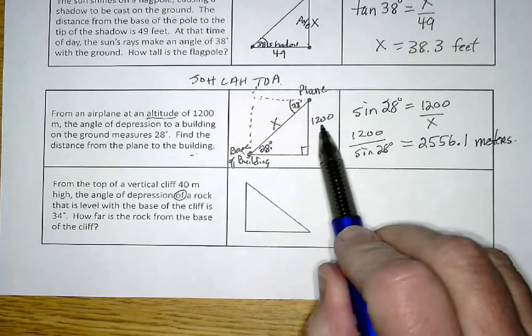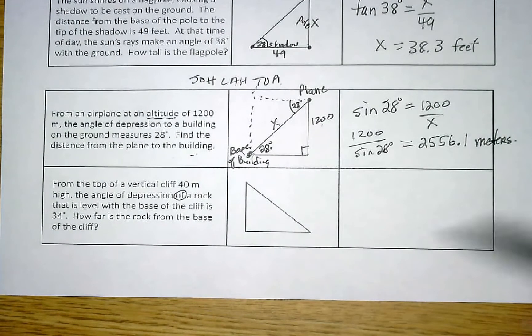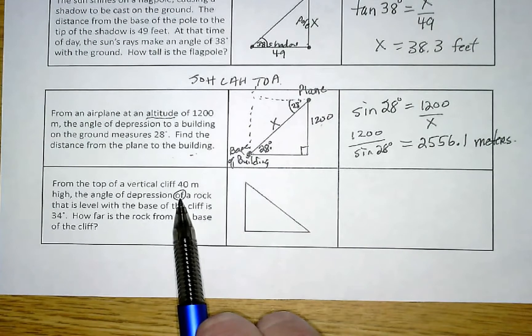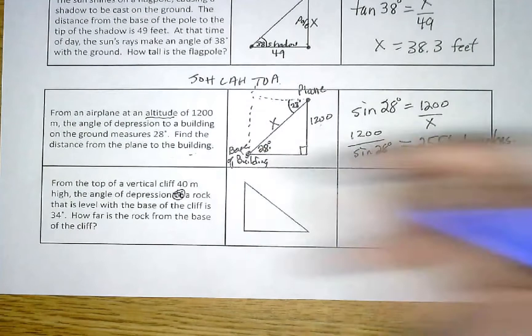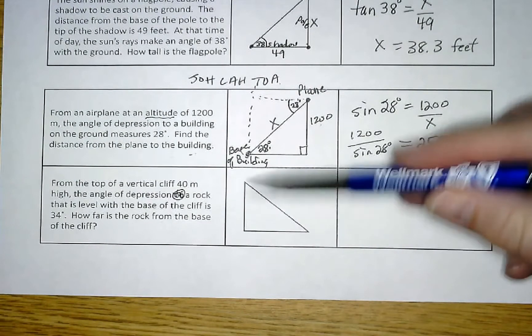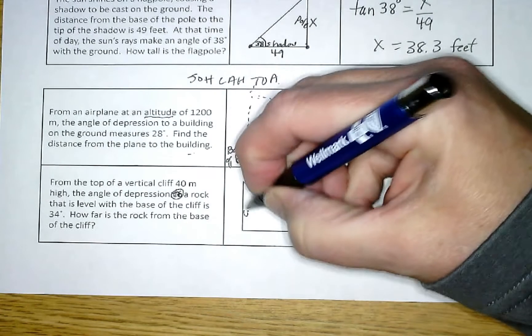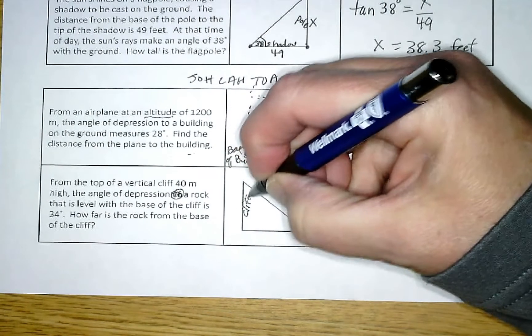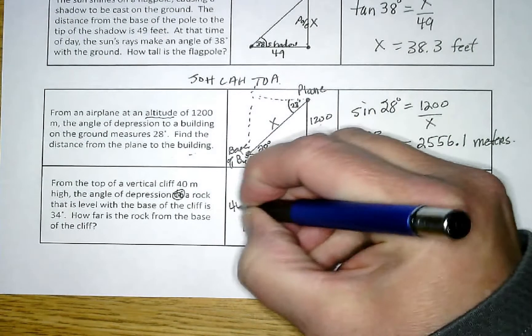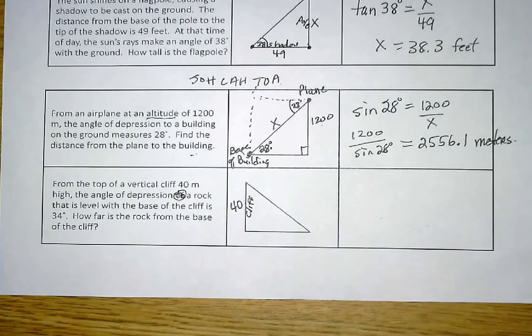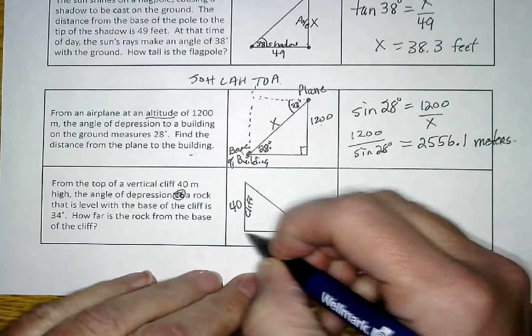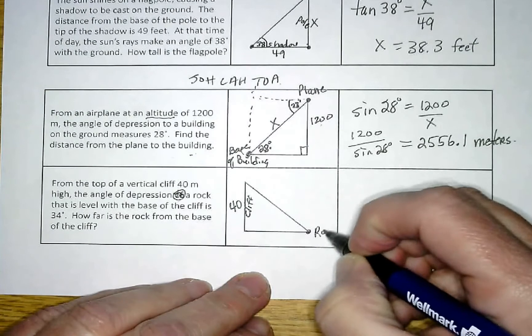The last one: there's a word that will change the meaning here. This word right here should be 'to a rock' not 'of a rock.' From the top of a vertical cliff—oh, vertical, there's my cliff. The cliff is 40 meters high, so that side is 40. The angle of depression to a rock that is level with the base of the cliff, so here's the base of the cliff, this rock is level with it, so this is the rock.